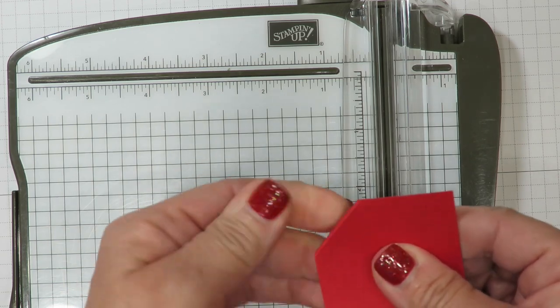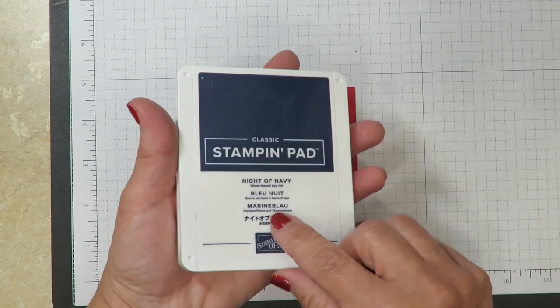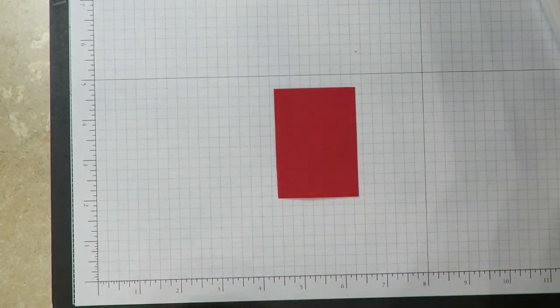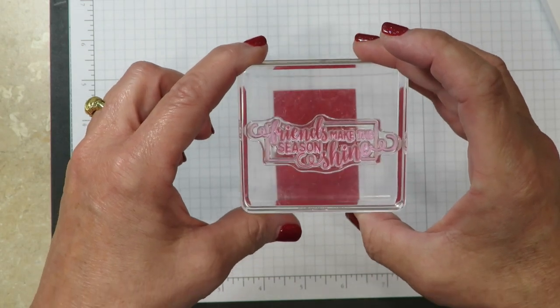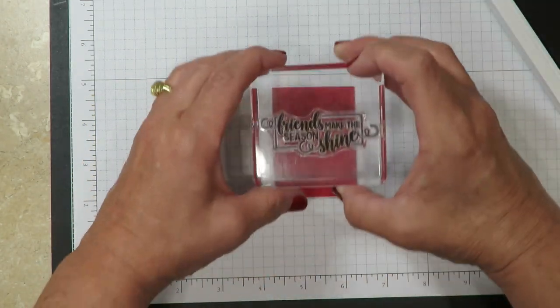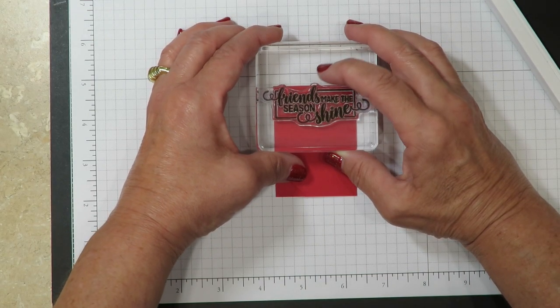I'm going to bring in the Night of Navy ink pad and I've mounted the greeting from the stamp set that says 'friends make the season shine.' So I'm going to ink that up and that's going to get stamped all the way here near the top of that real red piece.